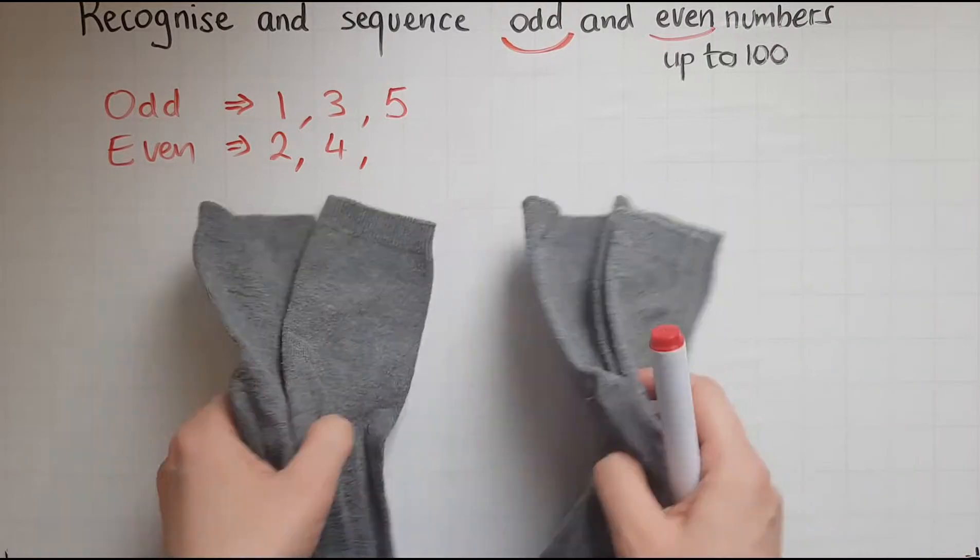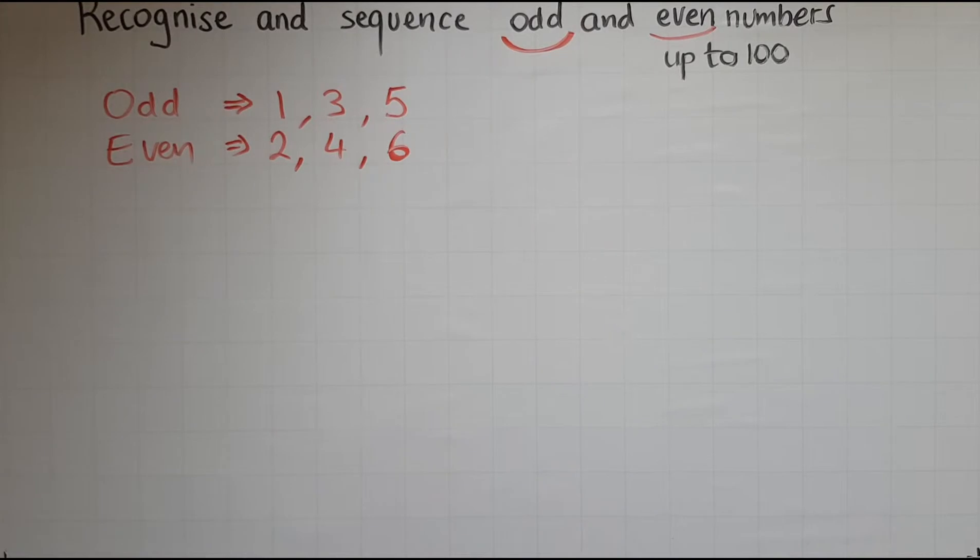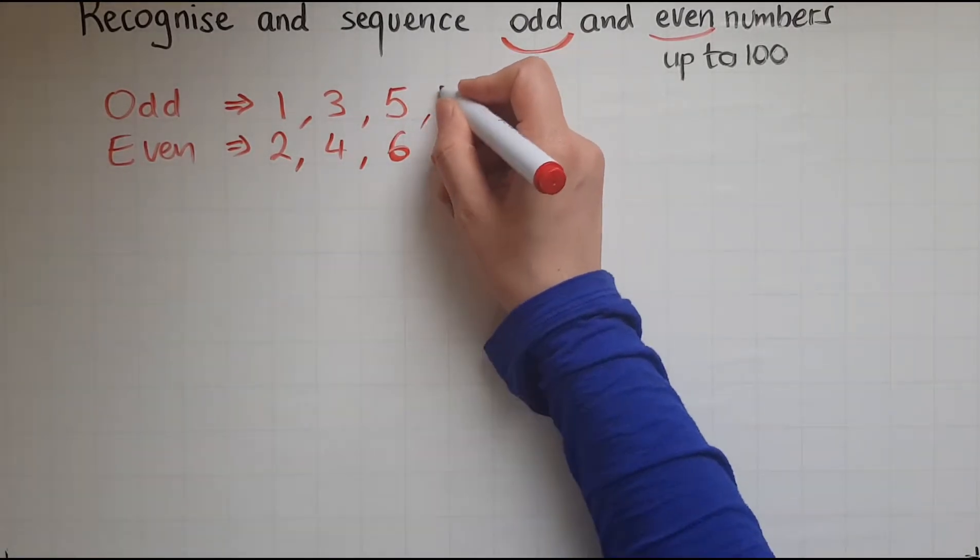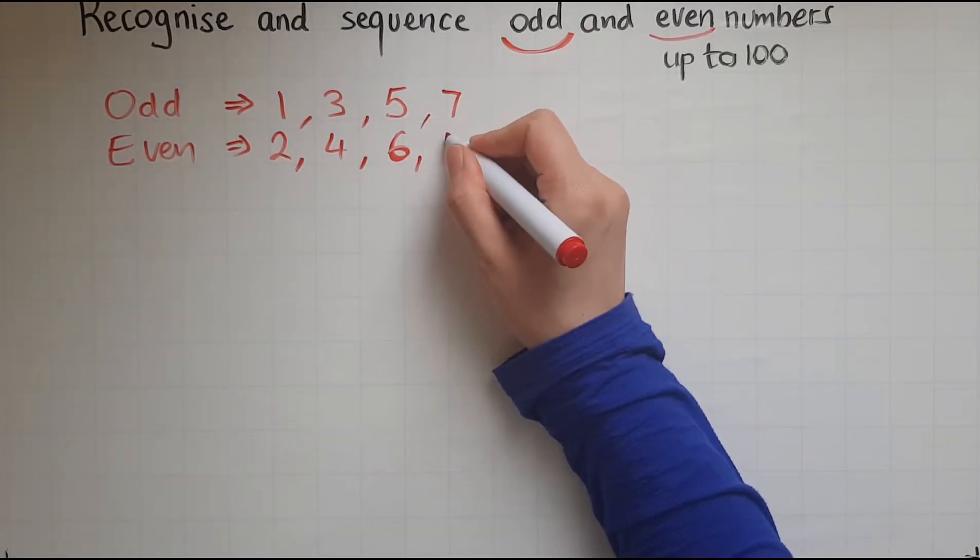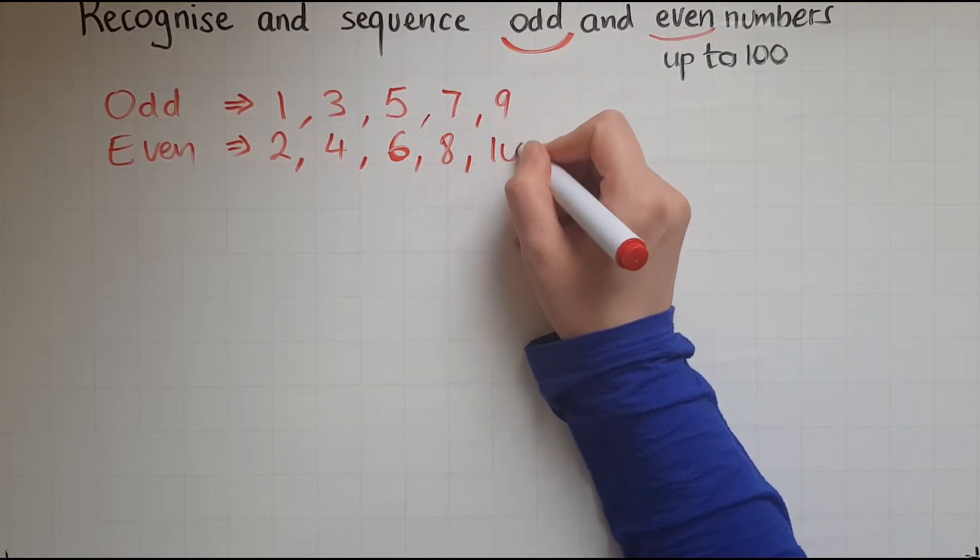Now, what happens with six? Six would be even because we can make three pairs. Seven would be odd. Eight would be even. Nine would be odd. Ten would be even.